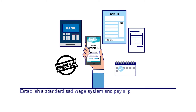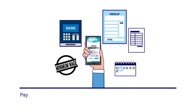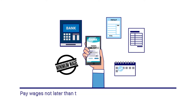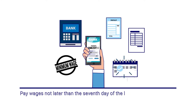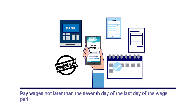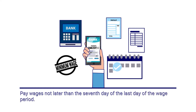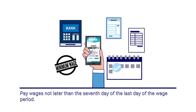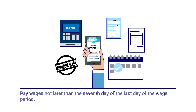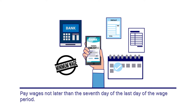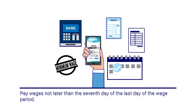Pay wages not later than the seventh day of the wage period and avoid non-payment or delayed payment. When a delay is unavoidable, the permission of the Director General of Labour must be obtained.